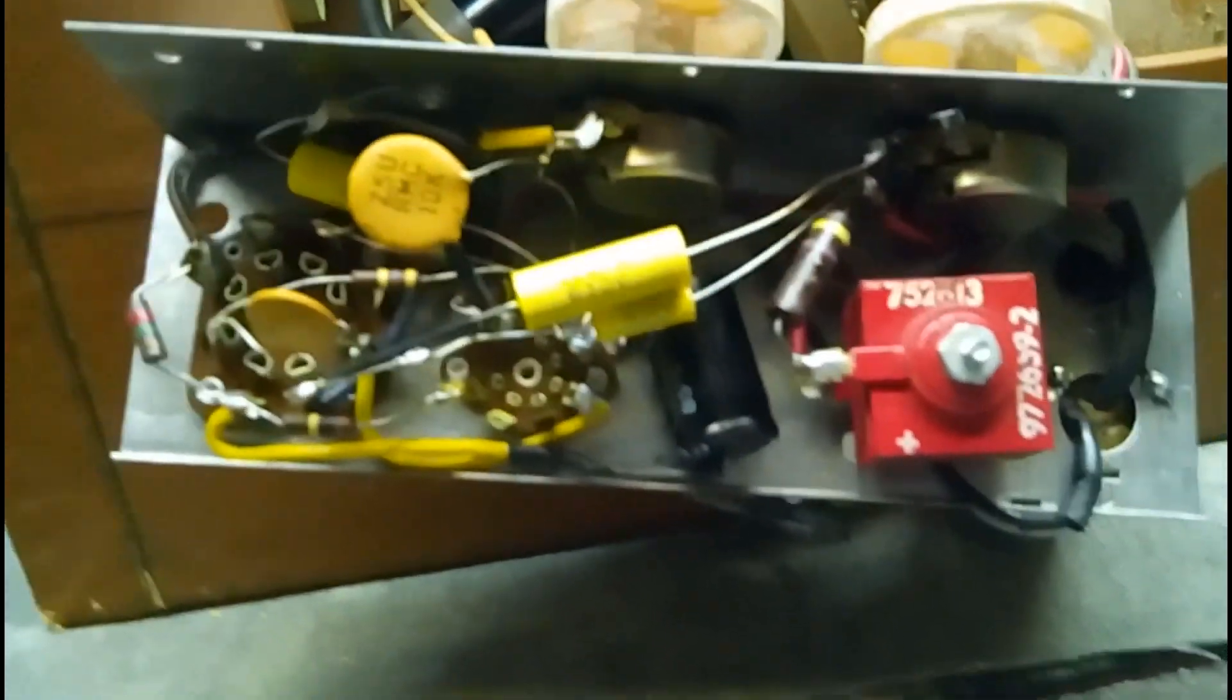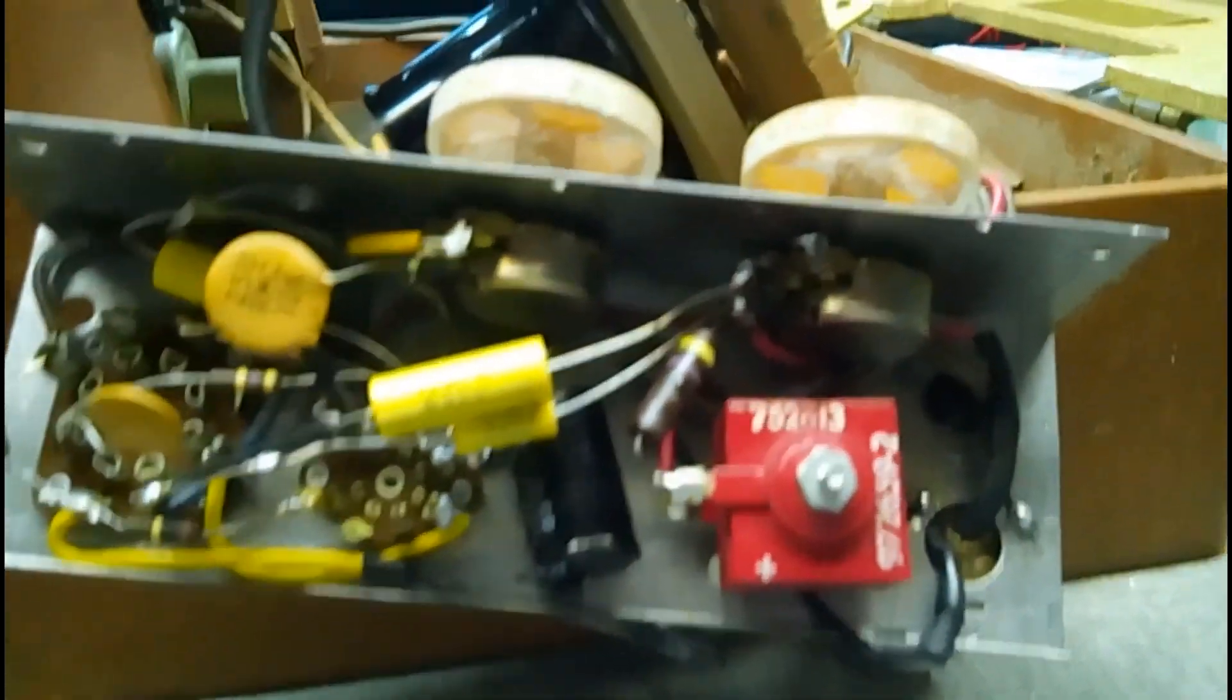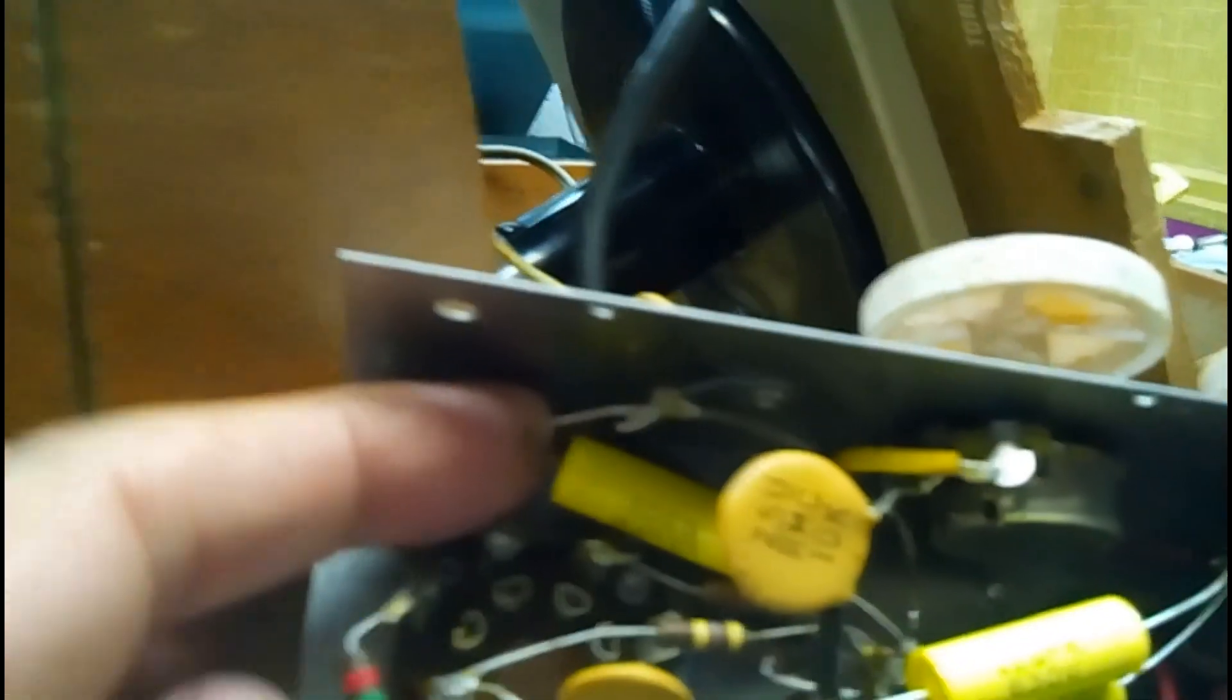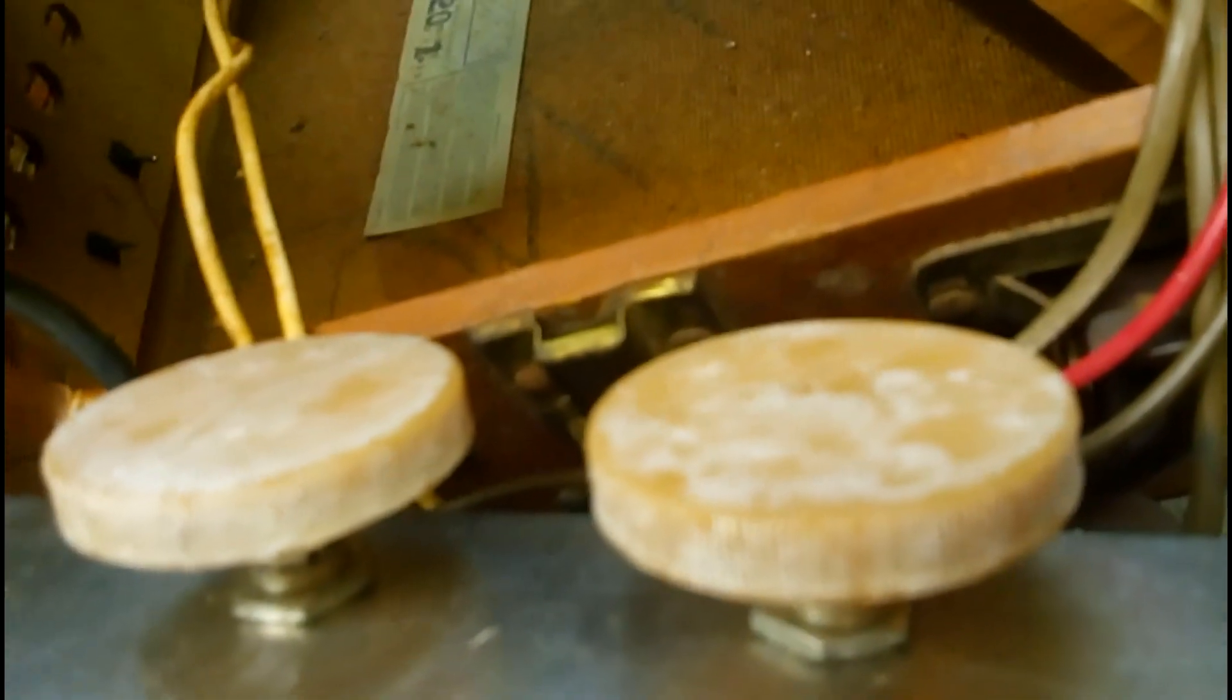I've got the capacitors all changed except for the mica capacitors, which are fine. Got all the wax capacitors out and the filter capacitors in. Started cleaning the knobs—I don't know what that white stuff is, but it comes off with rubbing alcohol, which is very gentle. I'm sure I can get them a little cleaner.